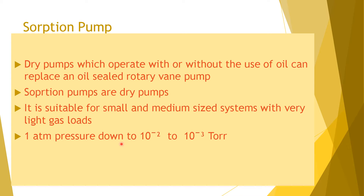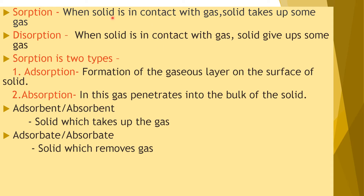The pressure range of the sorption pump is down to 10⁻² to 10⁻³ torr. Sorption refers to when a solid is in contact with a gas and the solid takes up some gas. Desorption is the reverse — when the solid is in contact with gas and gives up some gas. Sorption is mainly divided into two types: adsorption and absorption.